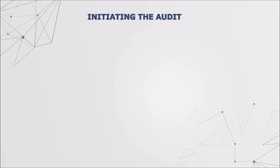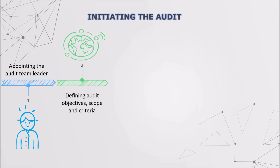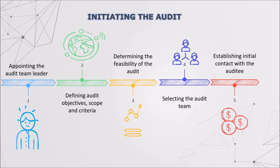As to the initiating stages, we still have a very specific procedure to follow. Firstly, we need to appoint the audit team leader to set up our own audit team. And then we are ready to define our audit objectives, scope, and criteria. Thirdly, determining the feasibility of the audit could be very helpful to proceed with our audit activities. After that, we need to build up our own audit team to conduct our work. Finally, we are able to establish initial contact with the auditee.